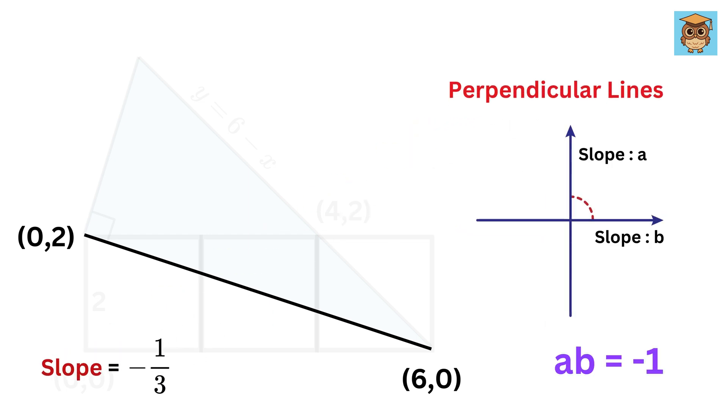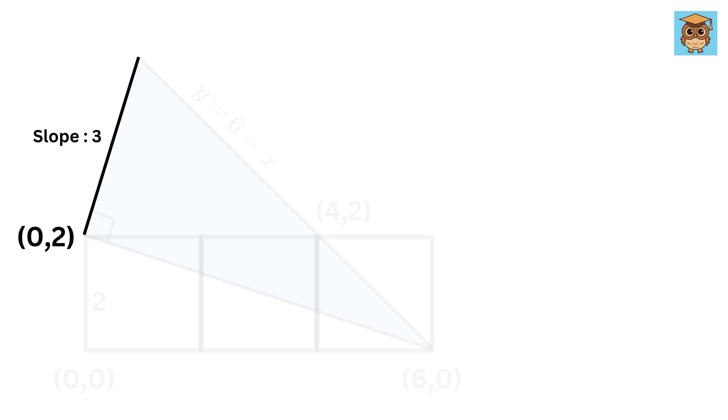Now here comes the magic. We know that the product of the slope of two perpendicular lines is always negative one. So if we call the slope of this line as m, then m times minus one by three equals minus one. So m equals three. Awesome.